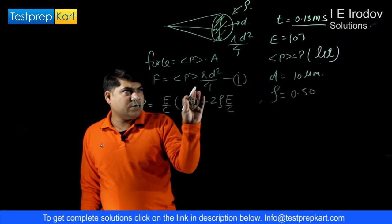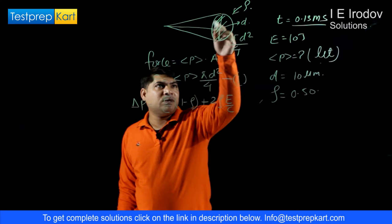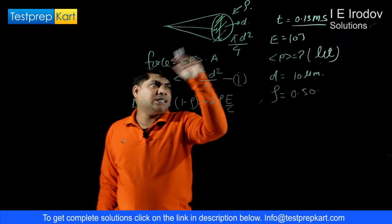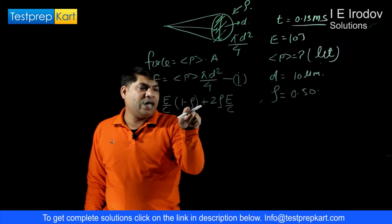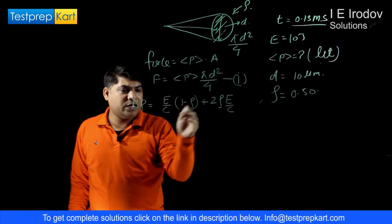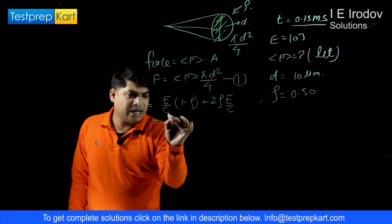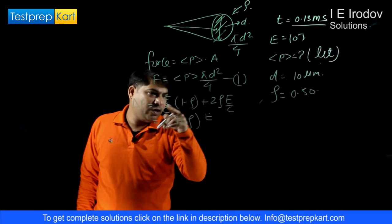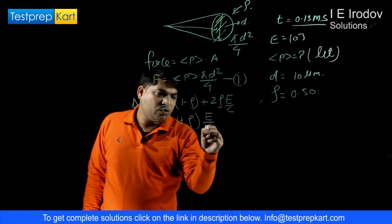When this laser beam is falling on that surface it is making a circular spot and some part is getting reflected. We have information about reflection coefficient, then change in momentum is this, or we can write net change in momentum is 1 plus rho into E over C.